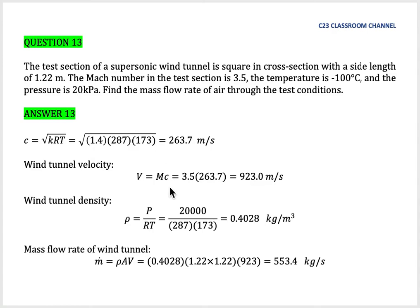Since the wind tunnel uses air, we use 287 for the gas constant and temperature is 173. We get that the density of air under these conditions is 0.4028 kg per cubic meter.